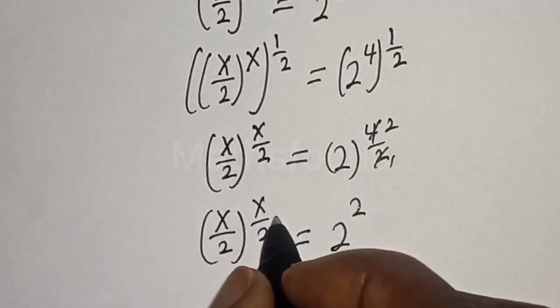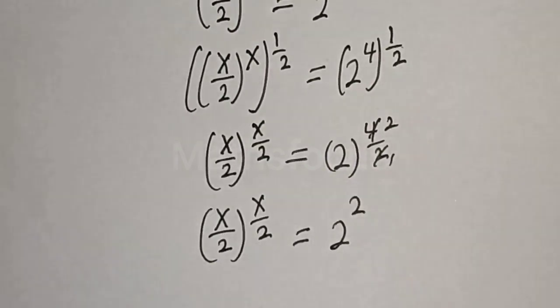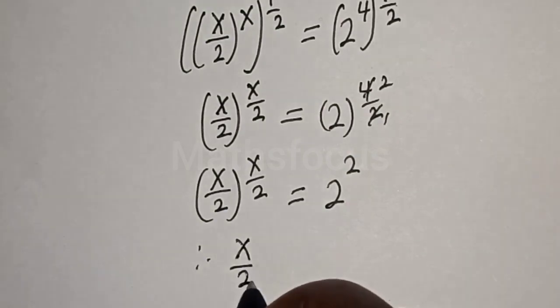If you compare this, this exponent equals 2 and the whole of this equals 2. Therefore, S over 2 equals 2.